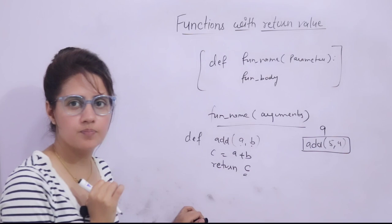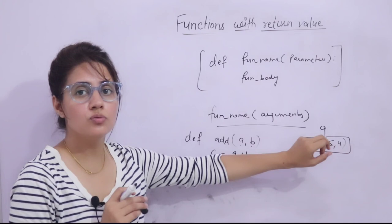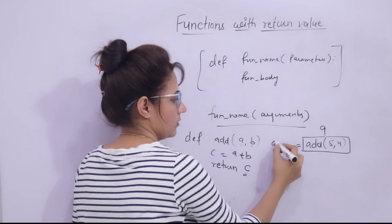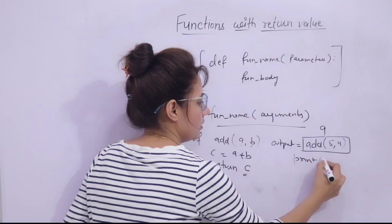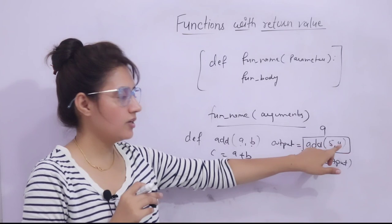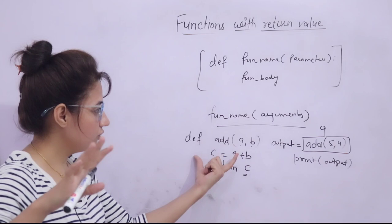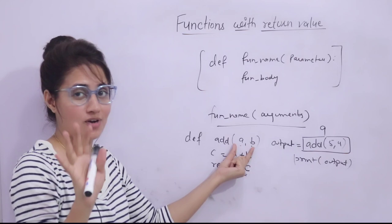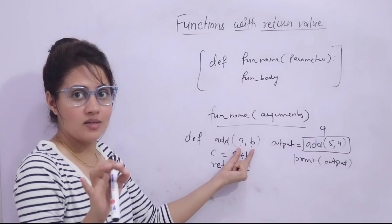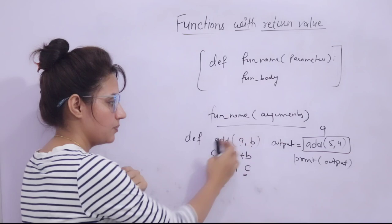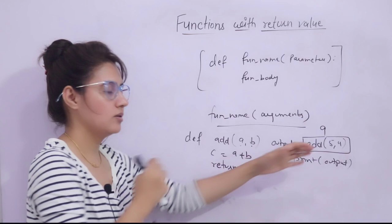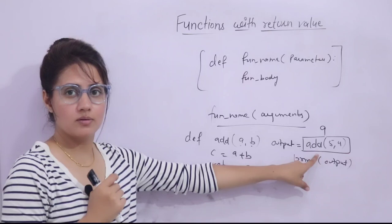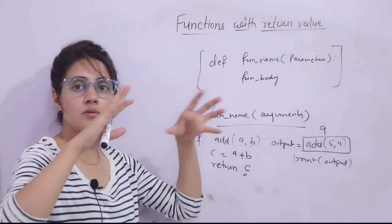There is a returned value, so you have to accept it in a variable — for example, `output = add(5, 4)`, then `print(output)`. Or simply `print(add(5, 4))`. In general, a function accepts some arguments — though it's not necessary that every function accepts arguments — then processes something based on those parameters and returns a value to the caller. That returned value is known as the return value.